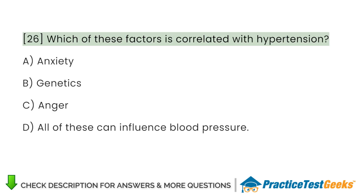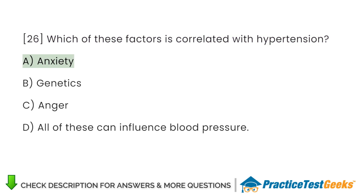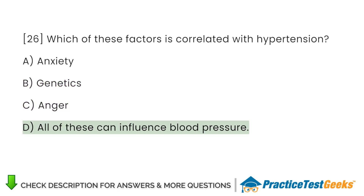Which of these factors is correlated with hypertension? A. Anxiety B. Genetics C. Anger D. All of these can influence blood pressure